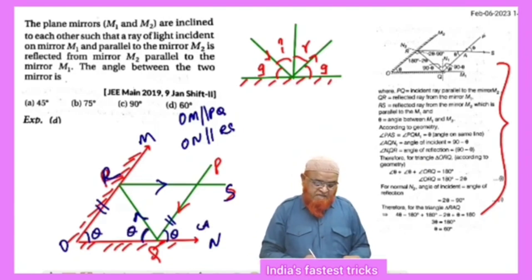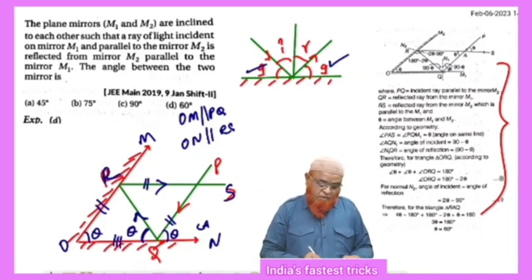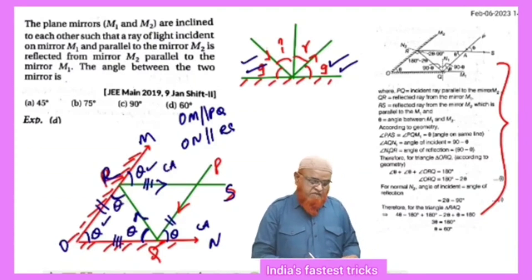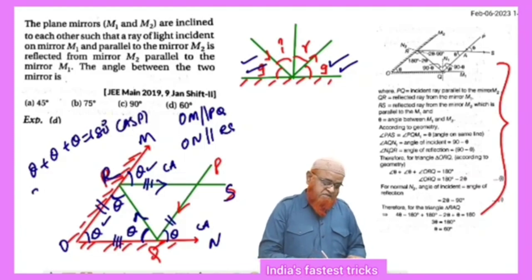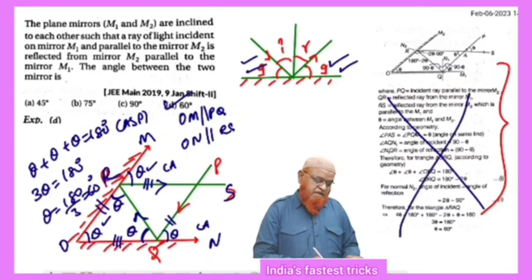If this is theta, this is also going to be theta because these are called glancing angles. Similarly, since ON is parallel to RS, this is also theta — again corresponding angles and glancing angles. Therefore theta + theta + theta = 180°, by angle sum property. So 3θ = 180°, giving theta = 60°.